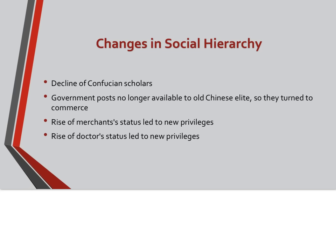There were many changes in the social hierarchy during the Yuan dynasty under Mongol rule. For example, there was a decline of Confucian scholars, and government posts were no longer available to old Chinese elites, so they turned to commerce. This led to a rise of merchant status and new privileges as well.